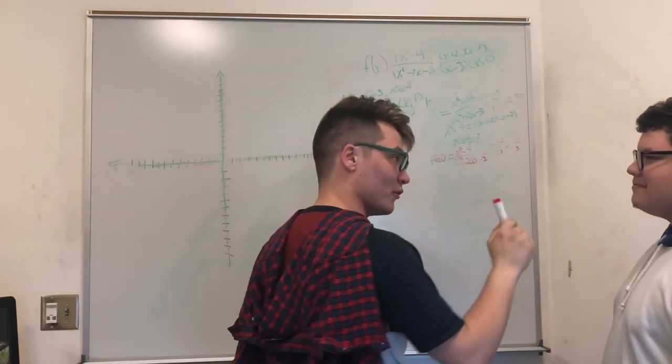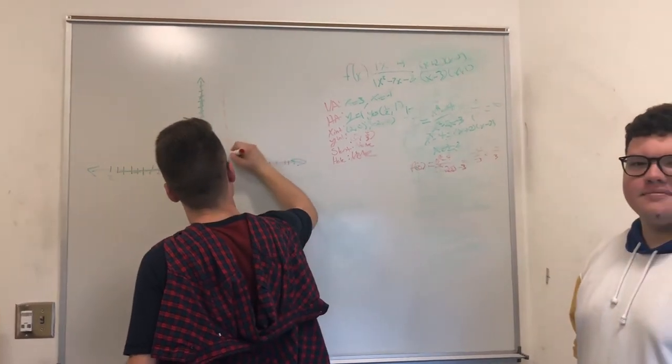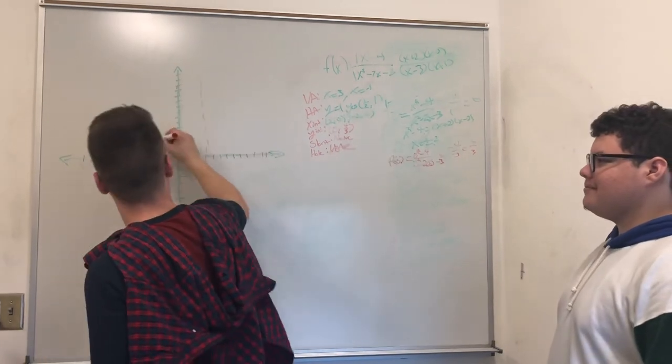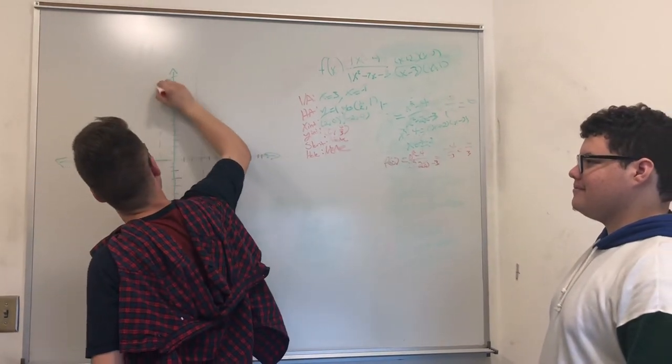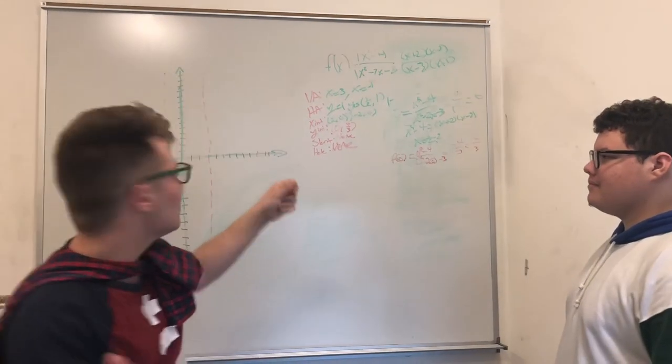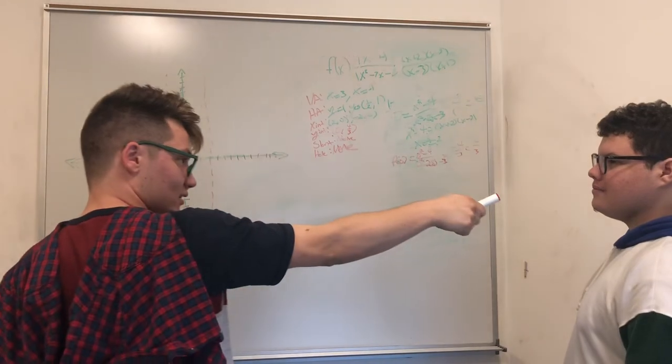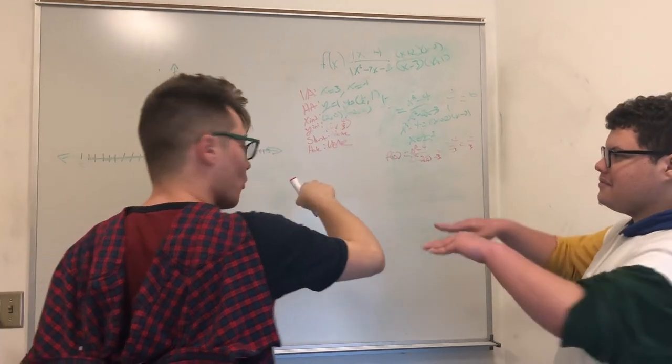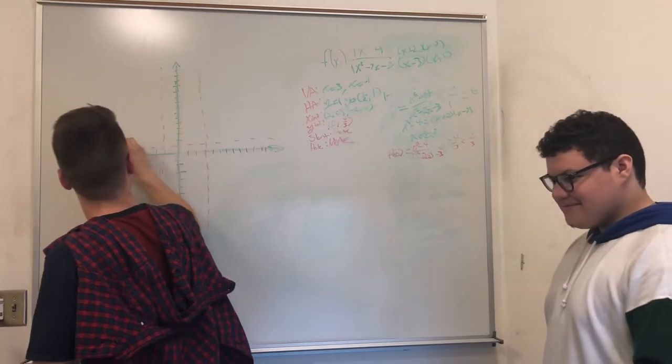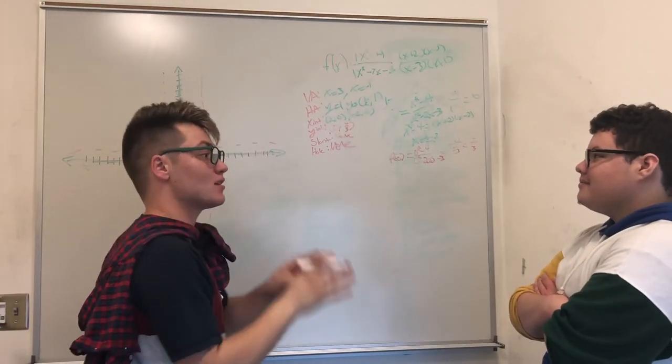So, first, graph the vertical asymptotes at x equals 3 and x equals negative 1. Ta-da! So, now we're going to graph the horizontal asymptote, which is where? y equals 1. Alright.